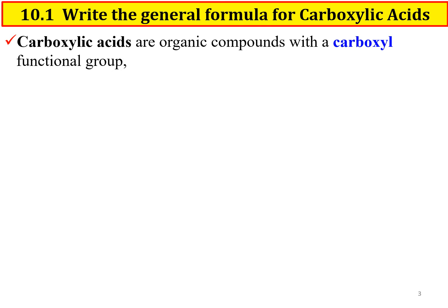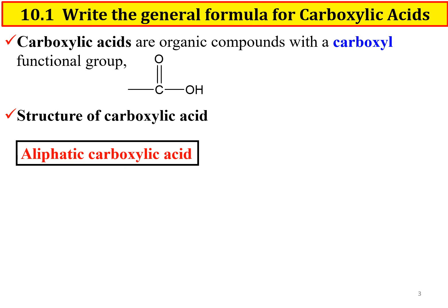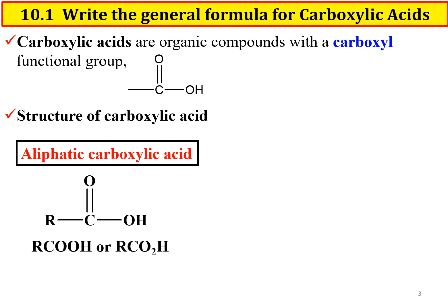Carboxylic acids are organic compounds with a carboxyl functional group, COOH. Structure of carboxylic acid — aliphatic carboxylic acid: RCOOH, or can be written as RCOOH or RCO2H, where R represents alkyl, cycloalkyl, or H.